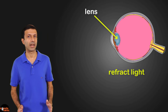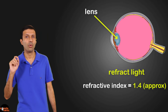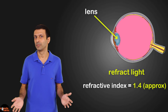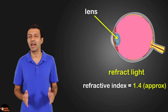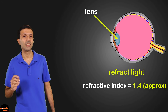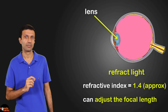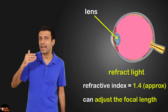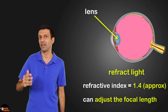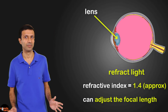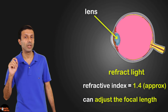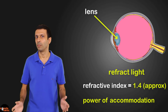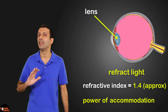The human eye lens has a refractive index of approximately 1.4. The lens is flexible — it can change its shape and thickness, adjusting its focal length so that we can focus on objects at different distances and get a clear image on our retina. This adjustment of the eye lens is known as the power of accommodation, which we'll talk more about later in the video.